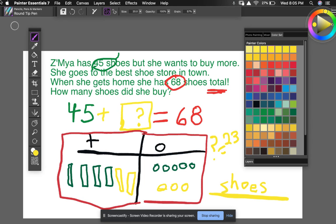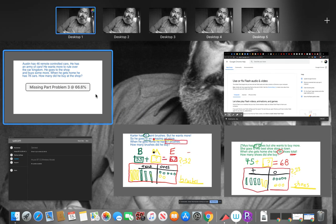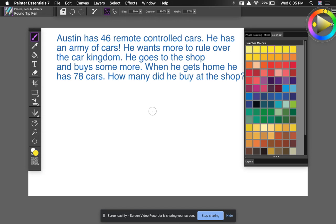So I hope that makes more sense. I know these are tricky. What I'm going to do is leave you guys with this and you can pause it and work on it. Let's see. It says Austin has 46 remote controlled cars. He has an army of cars. He wants more to rule over the car kingdom. He goes to the shop and buys some more. When he gets home, he has 78 cars. How many did he buy at the shop? So that's what I want you to figure out. Try to use place value in tens and ones. Good luck. And thank you for listening.